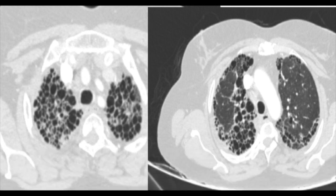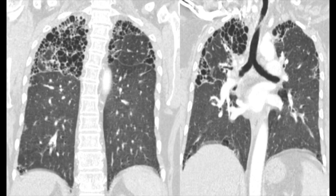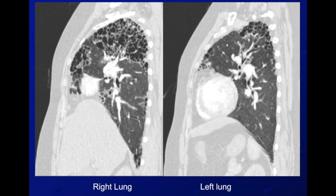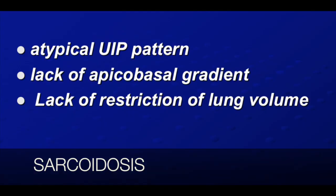In this next case: there are apical honeycombing, interlobular septal thickening, and loss of architecture especially in the upper lobe. There is not much basal involvement. This coronal image shows bilateral honeycombing predominantly in the upper lobes with lesser changes in the lower lobes. This is an atypical UIP pattern — you do not call this IPF, you call it UIP atypical, because it is not involving the bases. This turned out to be stage 4 sarcoid.